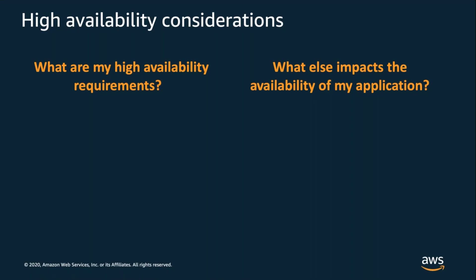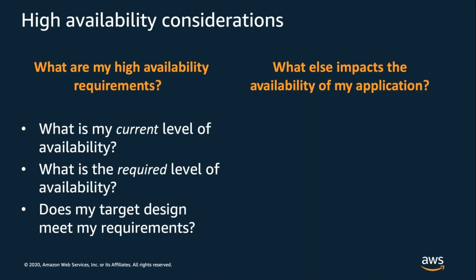There are two important areas to consider when looking at high availability for your applications: first, what are your high availability requirements, and second, what else impacts the availability of your application. High availability doesn't come for free — it's an intentional trade-off of cost and complexity for uptime. Customers are most successful when they're able to clearly define the RPO and RTO requirements for each workload — including your current level of availability, how you're measuring it, and what the business driver for requirements is.